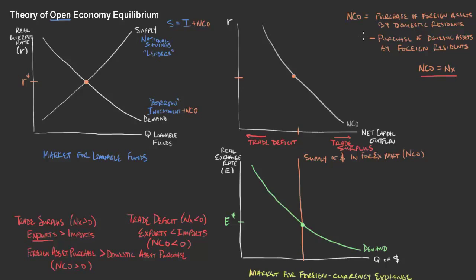Now that we've spent some time thinking about net capital outflows as a connector between the market for loanable funds and the market for foreign exchange currency, and we've discussed where there's a trade deficit and trade surplus and what that looks like in this relationship — I think the easiest way to consider this net capital outflow is from the perspective of the foreign resident. As our domestic interest rate is higher,